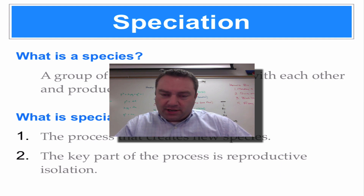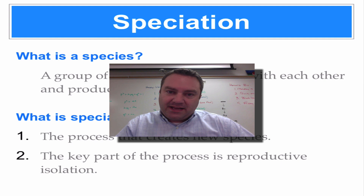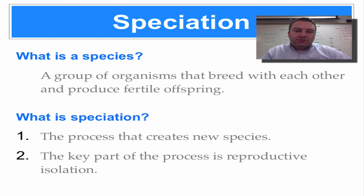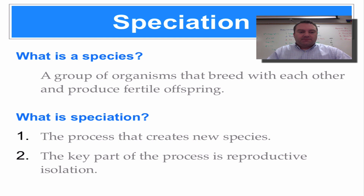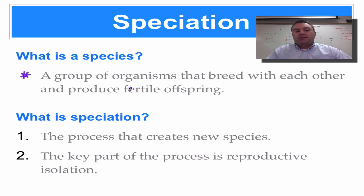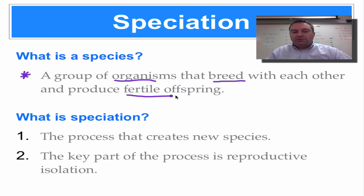If we're going to talk about speciation, which is the process of making a new species, we need to come up with a definition of what a species is. Our book uses the standard classic definition of a species: it's a group of organisms that can breed with each other and they produce fertile offspring.